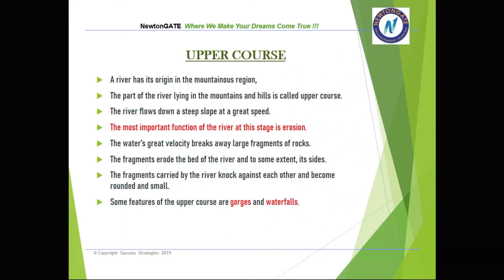Let us look at the features of the upper course. A river has its origin in the mountainous region, and the part of the river lying in the mountains and hills is called the upper course. The river flows down a steep slope at great speed, and the most important function at this stage is erosion. The water's great velocity breaks away large fragments of rock, which erode the bed and sides of the river. The fragments carried by the river knock against each other and become rounded and small. Some features of the upper course are gorges and waterfalls.